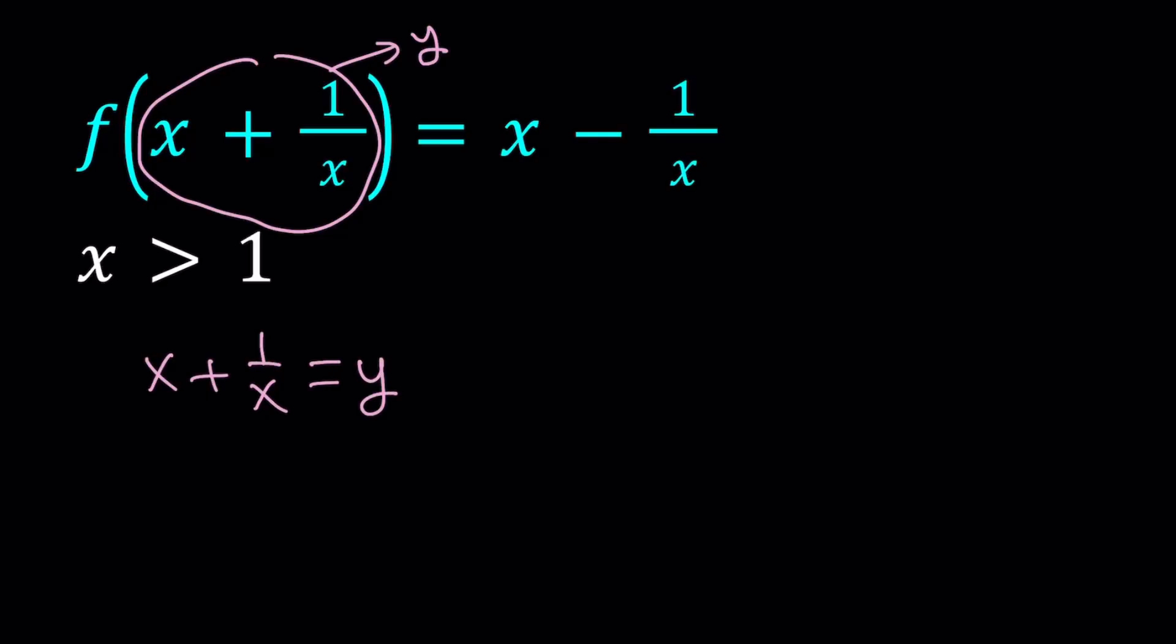So x plus 1 over x is equal to y. And the question here is basically, if x plus 1 over x is equal to y, if I can express that in terms of y, how can I express x minus 1 over x in terms of y? So that's going to be our question.